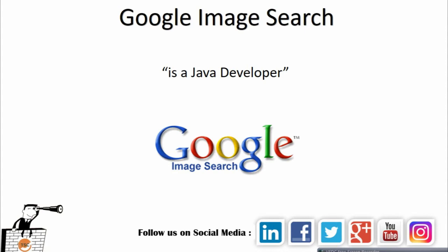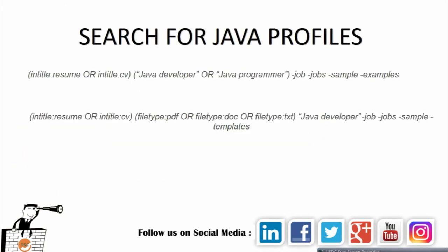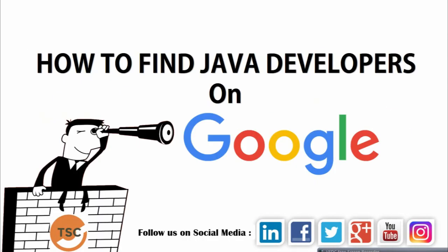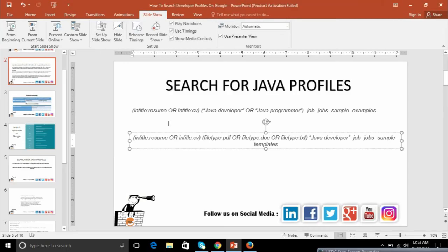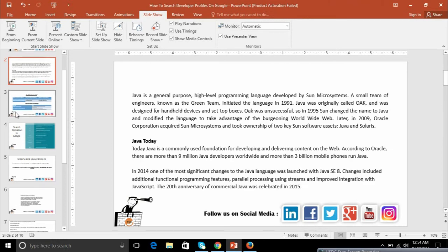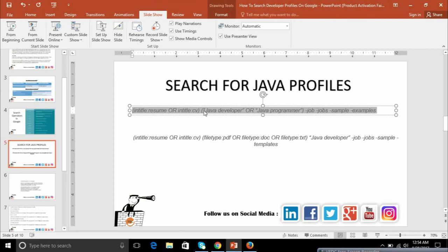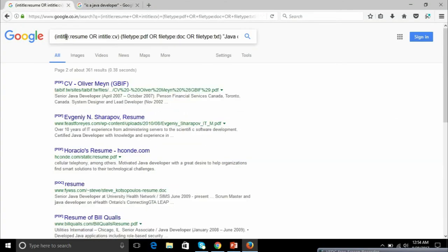We also have Google Image Search, which you can use to find Java developers. I'll show you live how to use it. You can use the query is:a java developer by visiting Google Image Search. The search parameters I've covered can be used to find any skill, any developer, or technical person. You can add as many sites, criteria, skills, and job titles — developer, programmer, engineer, or coder — as you want.